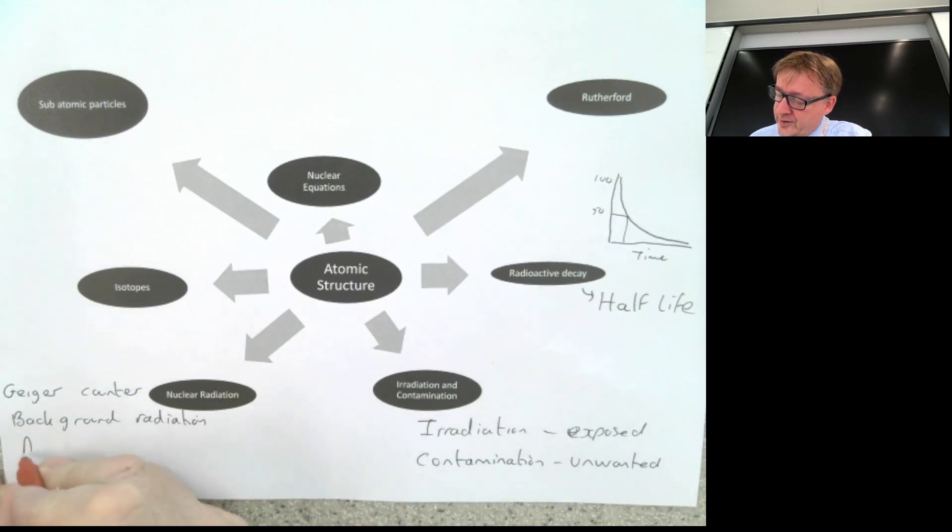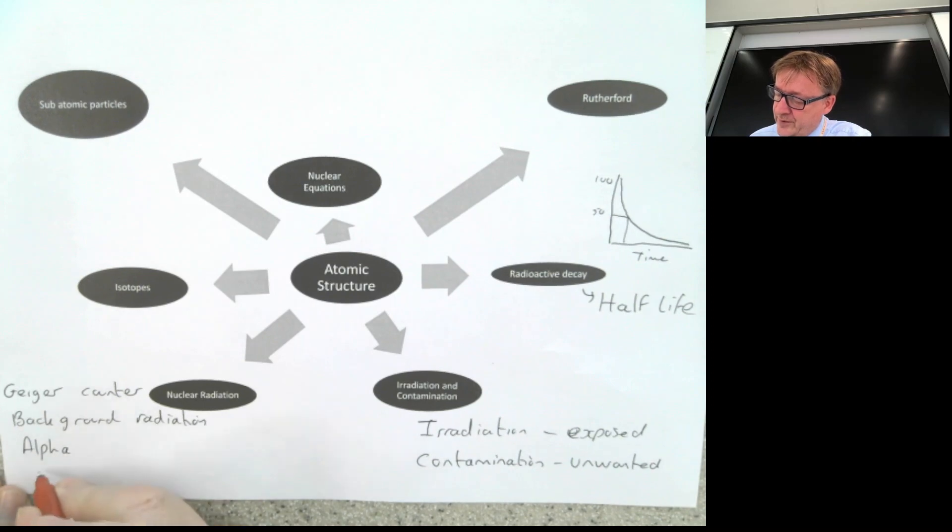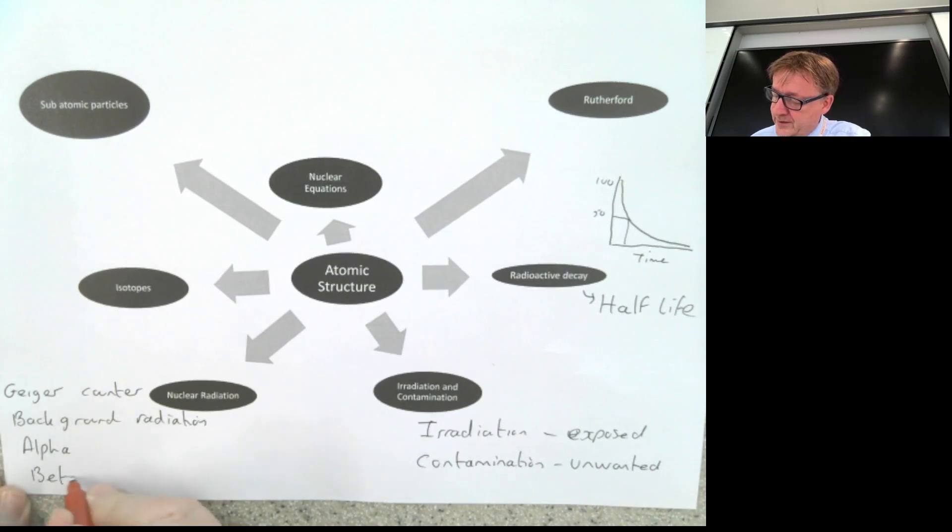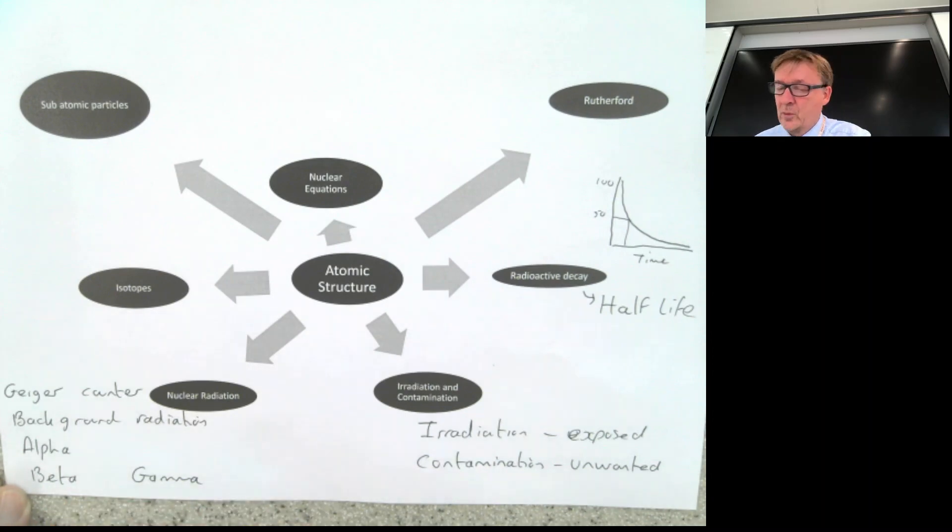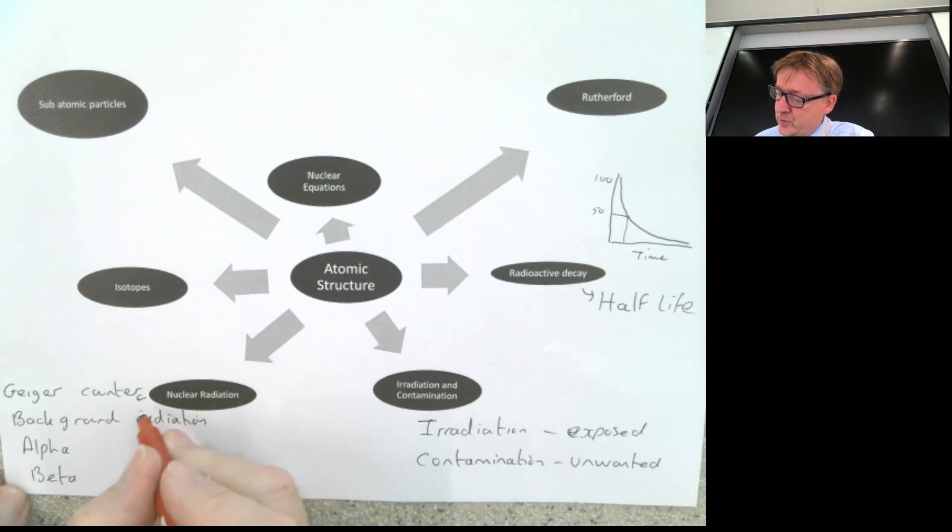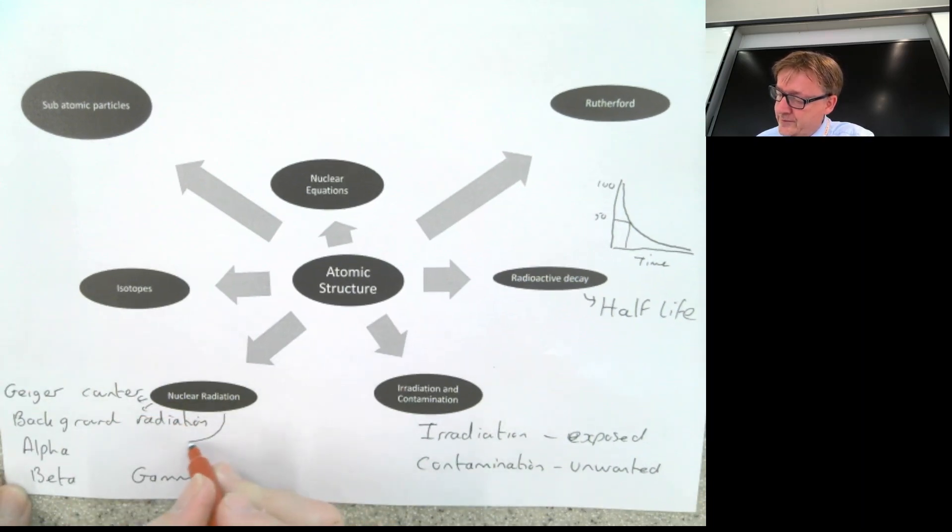You need to know about background radiation. You also need, most importantly, alpha, beta, and gamma. You need to know what they are. Alpha is a helium nucleus. You need to know what they can go through, what they can penetrate, what stops them, how far they can go in air, and their charges. You need to know that for each one of those three different things there. You need to know details about all three of them.